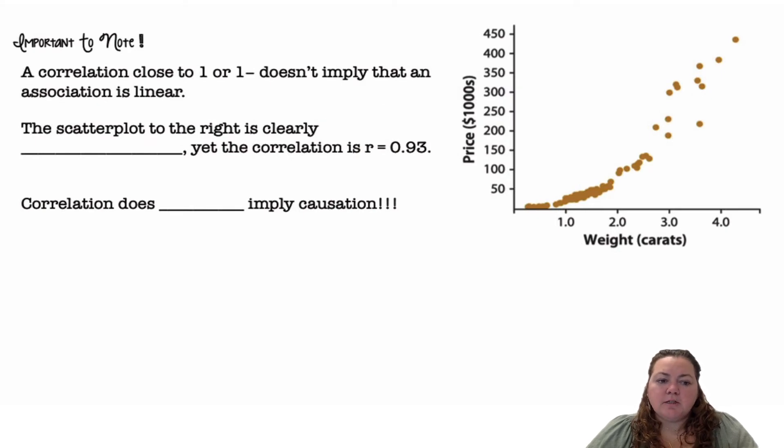All right, important to note: a correlation close to 1 or negative 1 doesn't imply that an association is linear. So just because the R value is really close to 1 doesn't necessarily mean it's linear.